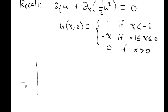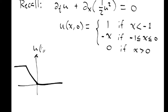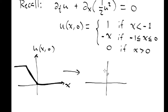Our initial function looks something like this — this is u(x, 0) with the x-axis shown. As time progresses, the solution begins to change: this curve begins to straighten up while we maintain the same profile on the left. This would be u(x, t) at some time t strictly less than one.